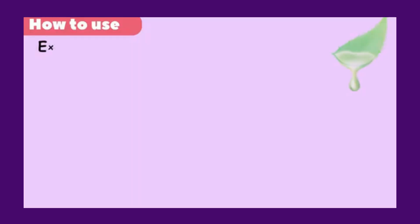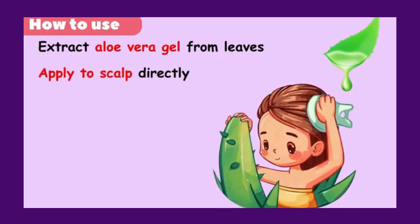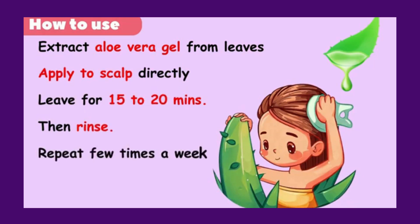To use it, extract fresh aloe vera gel from the leaf and apply it directly to your scalp. Leave it on for 15 to 20 minutes before rinsing it off. Repeat a few times a week. Over time, you will begin to observe the effect.